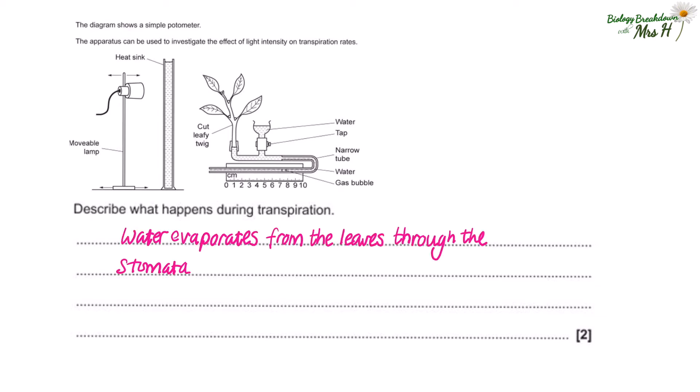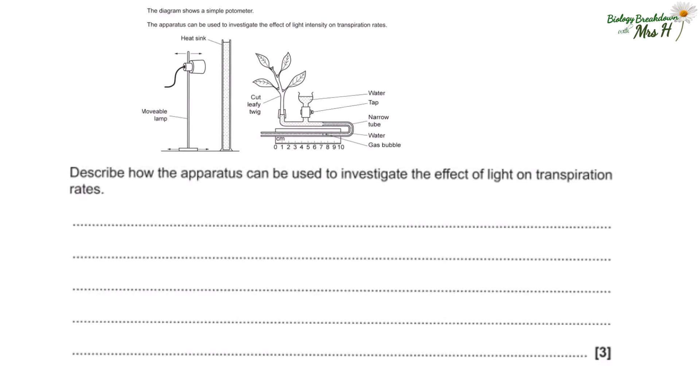Describe what happens during transpiration. So this is just a nice simple recall: water evaporates from the leaves through the stomata. And just in case you want to add an extra keyword in there, you could just pop by diffusion. Describe how the apparatus can be used to investigate the effect of light on transpiration rate. Start with the lamp as close as possible to the potometer.